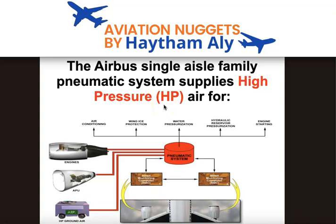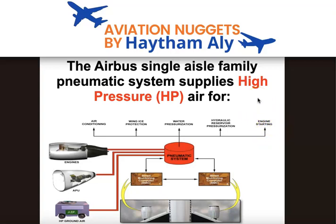As you can see here, the Airbus single aisle family pneumatic system supplies high pressure air for air conditioning, wing ice protection, water tank pressurization, hydraulic reservoir pressurization, and engine starting. This is the user of the pneumatic system — also called the aircraft bleed system or engine bleed system. We bleed air from the engine for a purpose not related to thrust.